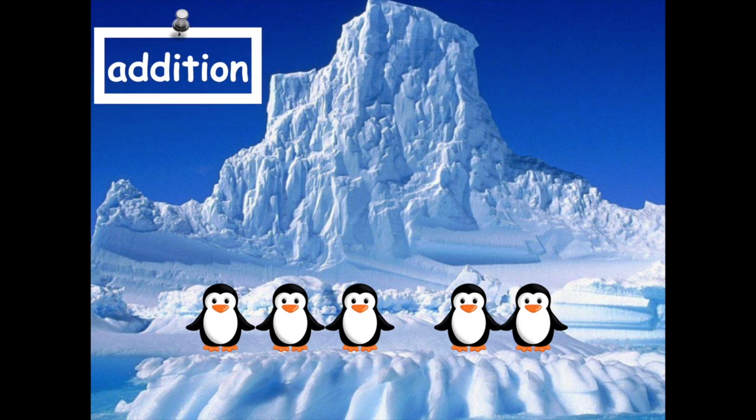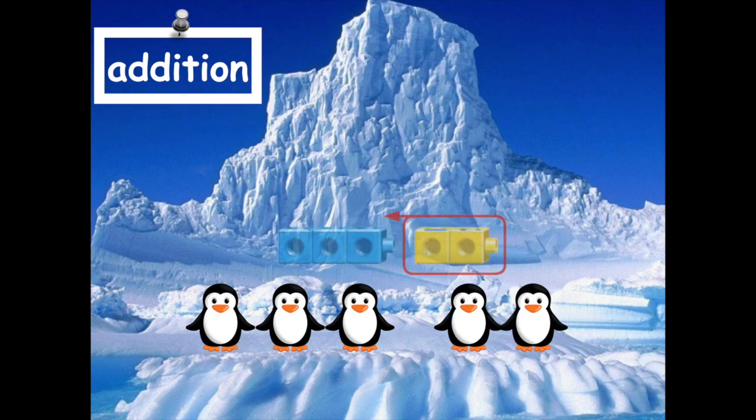I could show this same problem using unifix cubes. Here, I have three blue cubes. This represents the three penguins. I then have two yellow cubes. This represents the penguins that came to join in play. In this picture, the circle and arrow represent that the two penguins are joining the three penguins.